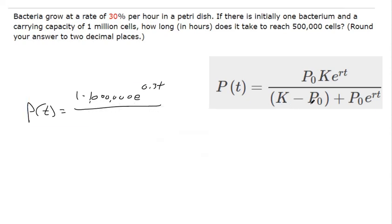And down here we have K minus, I'm just going to do that, that's 999,999. And then this is 1e to the 0.3t power. And so we're supposed to find out what t is when P of t is 500,000.